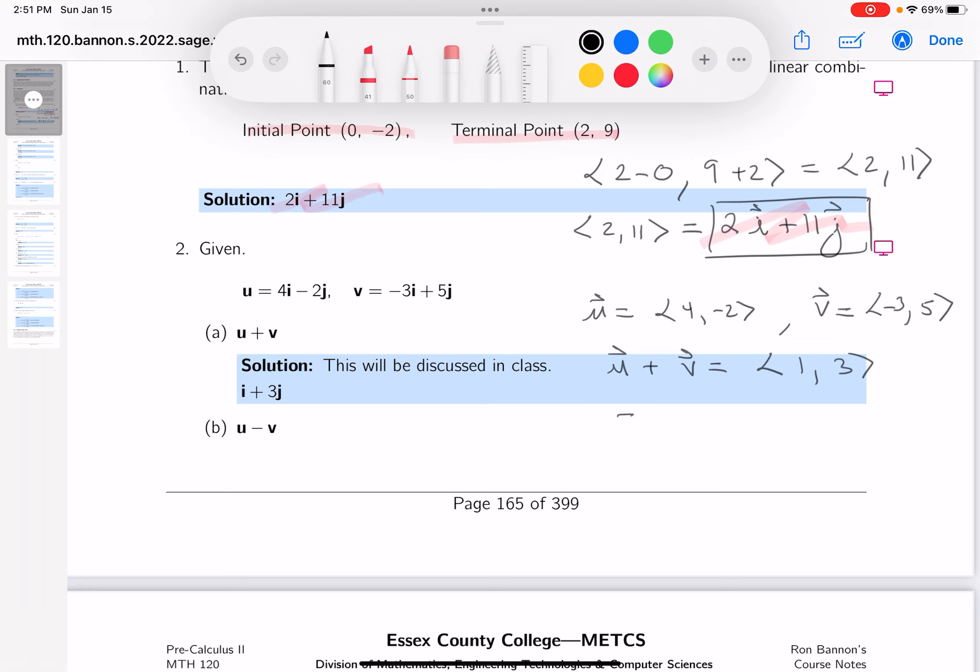If you write that in ij notation, that's i, or 1i if you want, plus 3j. Let's look at the key. You're seeing that right over here. Let's do the next one.